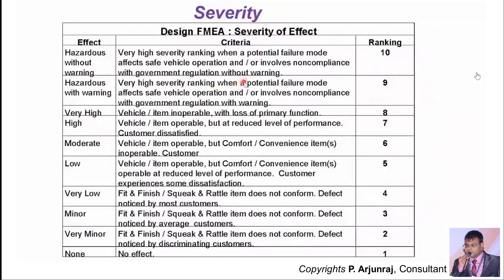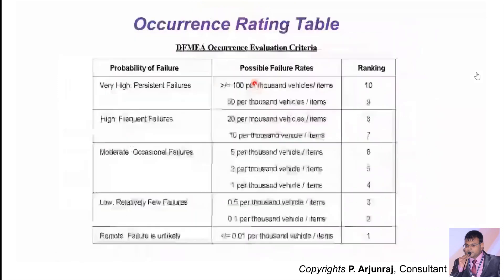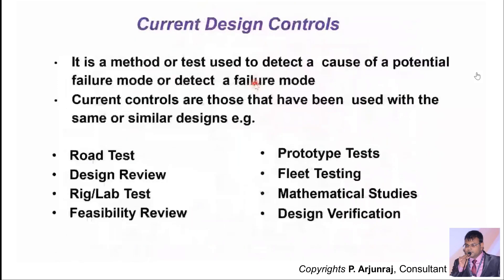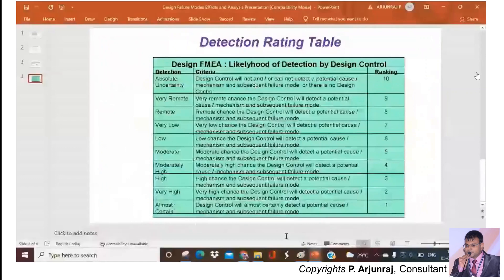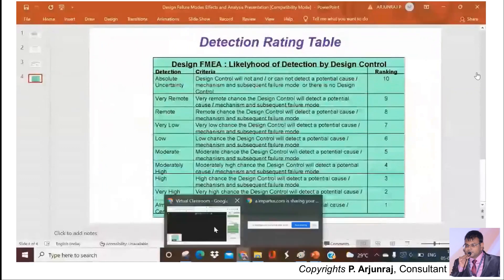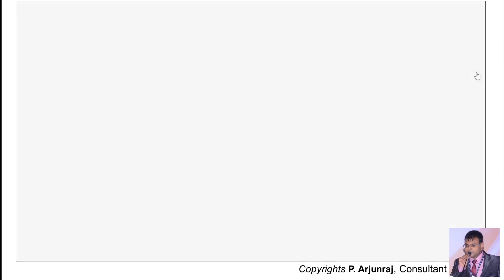We have seen the Risk Priority Number (RPN), which is a product of Severity, Occurrence, and Detection rating. The product of all three gives you the RPN number. The higher the RPN number, the more important it is to have a proper control to ensure we reduce the RPN number going forward.